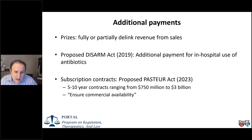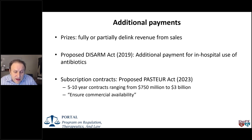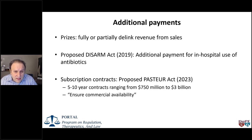Some formulations of these additional payments put responsibility on the manufacturer to not enforce their patents or to make their products available at low prices. This is a potentially promising area of pull incentives. One of the issues is that this depends on the quality of the antibiotics that come into development. Some concerns about the PESTER Act in the United States include that many new antibiotics approved by the FDA have not necessarily been transformative new products showing improved outcomes in patients with resistant organisms — just incremental changes to already available products not tested in patients with resistant disease.